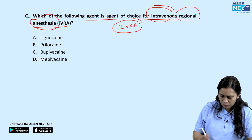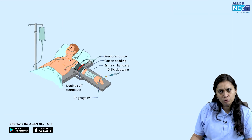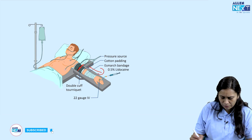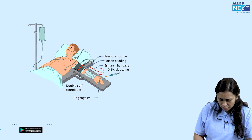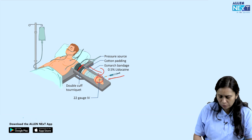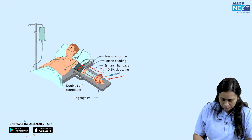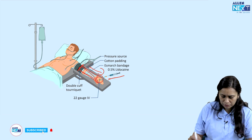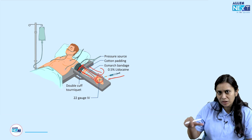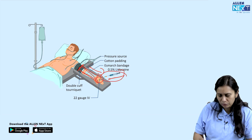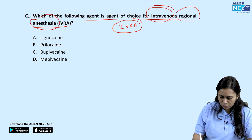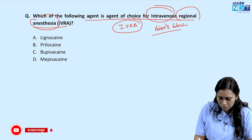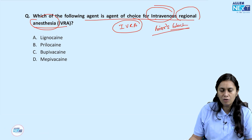In IVRA, we inflate a tourniquet above the patient's blood pressure, cutting the limb off from the rest of the circulation. Then we insert an IV cannula and give local anesthetic through it. All the nerve fibers of that limb get anesthetized, achieving regional anesthesia by the IV route. This is called IVRA or Bier's block, named after the person who developed it.